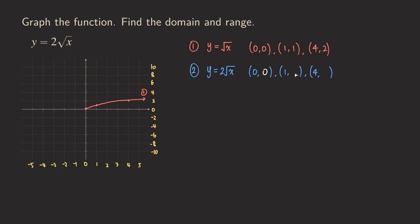For the second y-value, when we plug in x = 1, the parent function gives one, but here we get 2 times the square root of 1, which is 2. And for the third point, plugging in x = 4 gives square root of 4, which is 2, and 2 times 2 is 4. So we are doubling the y-values: 0 × 2 = 0, 1 × 2 = 2, and 2 × 2 = 4.